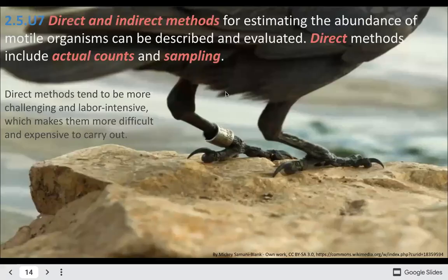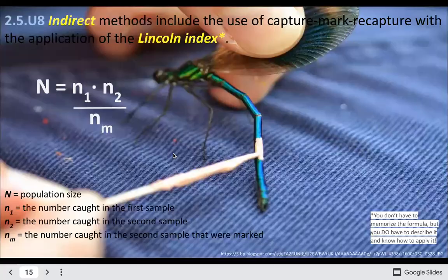There are different methods for figuring out how many mobile organisms there are. We could do an actual count or actual sampling. This is where you get things like the Lincoln index, which is the capture-mark-recapture method. You capture a sample of organisms, count the number captured in your first sample, then mark them in some way — for instance, putting a white mark on a dragonfly.